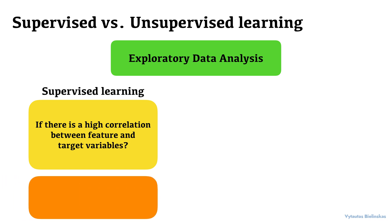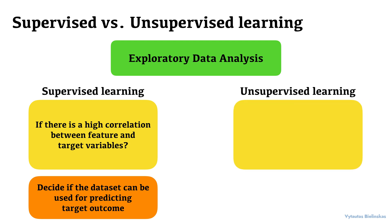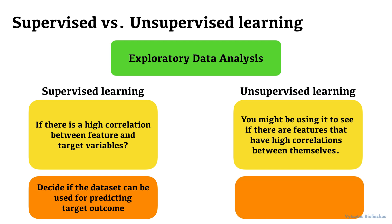so as to decide if the dataset can be used for predicting target outcome. In an unsupervised setting, you might be using it to see if there are features that have high correlation between themselves. Such correlation could point to redundant features, which you may want to remove.